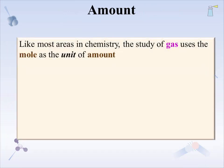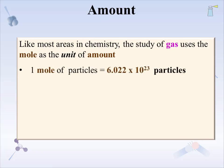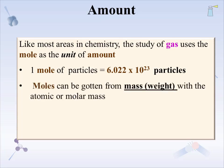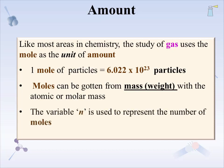Like most areas in chemistry, the study of gas uses the mole as a unit of amount. Amount is either given in moles or converted into moles. One mole of particles is 6.022 × 10²³ particles — some textbooks use 6.02, so use the one from your textbook. Moles can be obtained from mass or weight using the atomic or molar mass. The variable n represents the number of moles.